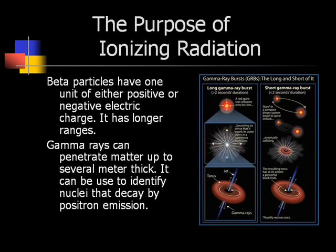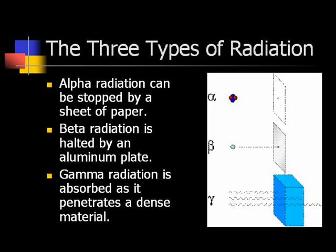The purpose of ionizing radiation. Beta particles have one unit of either positive or negative electrical charge and have a longer range. Gamma rays can penetrate matter up to several meters thick and can be used to identify nuclei that decay by positron emission. Alpha radiation can be stopped by a sheet of paper, beta radiation can be halted by an aluminum plate, and gamma radiation is absorbed as it penetrates a dense material.